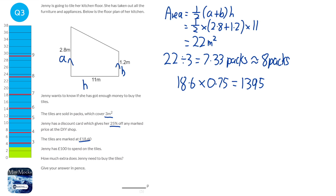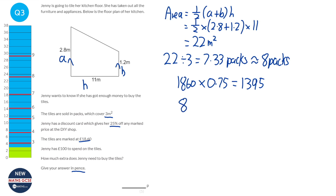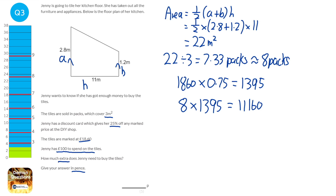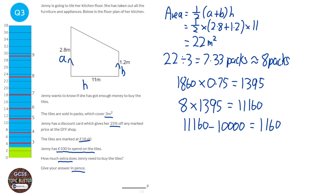I've done this in pence, so let's go back: £18.60 is 1860 pence times 0.75, so each pack will cost 1395 pence — and the reason we're doing this in pence is the answer needs to be given in pence. So it's going to be 8 lots of 1395 pence packs, which will cost 11,160 pence in total, or £111.60. But Jenny has £100 to spend, so we do 11,160 minus 10,000 pence, which gives 1160 pence. She needs to find £11.60 extra.